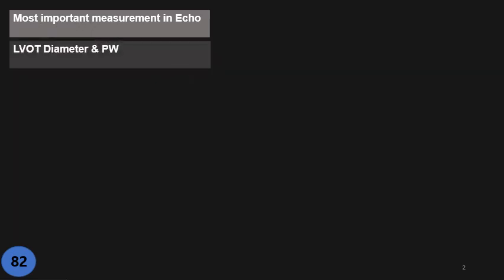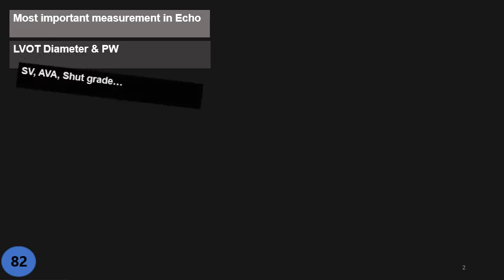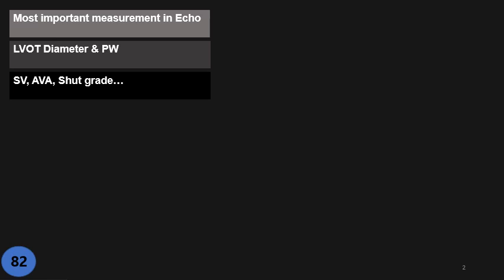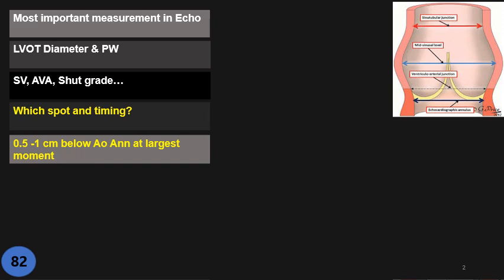Now let's do it. The most important measurement in echo is not EF, not tissue Doppler — none of them. The most important measurement in echo is LVOT diameter. Why? Because LVOT diameter affects the measurement of stroke volume, aortic valve area, shone grading, and so on. So it is very important — which spot and what time of the cardiac cycle do we measure LVOT?